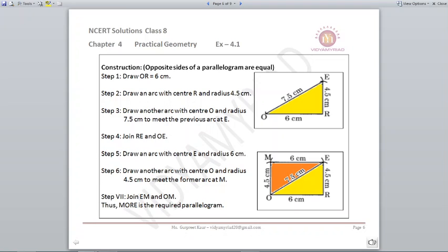Now from E we need EM and from O we need OM. So what will I do? With the help of my compass and scale I will open the measurement 4.5 cm and cut an arc from O and I will open 6 cm and cut an arc from E. Wherever they meet I will name it as M and join the lines, you will get the required parallelogram MORE.